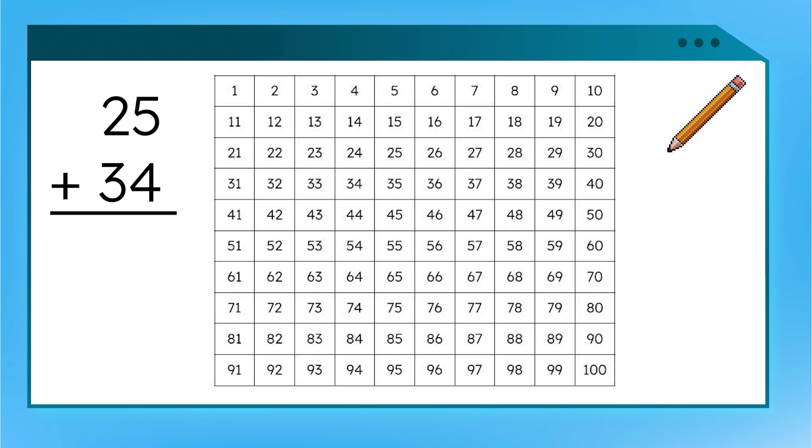Let's try 25 plus 34 using our hundred chart. When we use this strategy, it's easier to start with the greater number. Which number is greater here? Yes! 34 is greater. Go ahead and find 34 on your hundred chart. Now, let's break 25 into 10s and 1s to help us add. First, we'll add the 10s. How many 10s are in 25? That's right! Two 10s or 20.